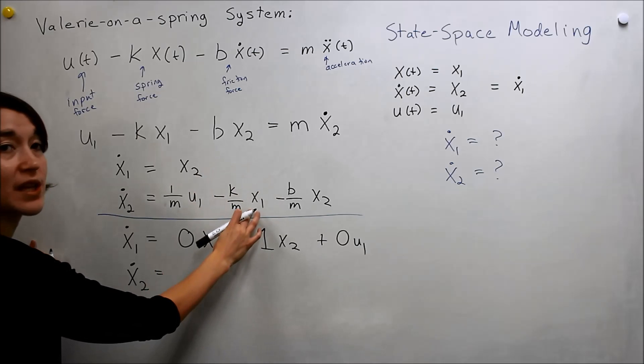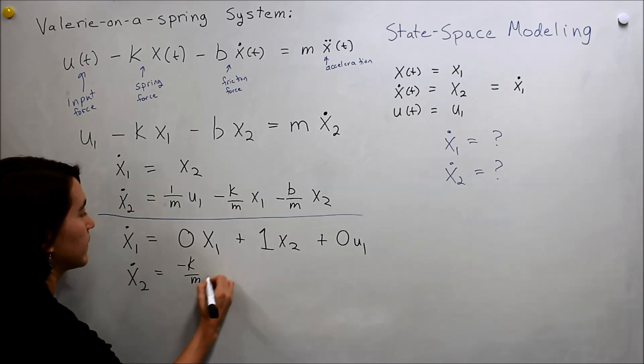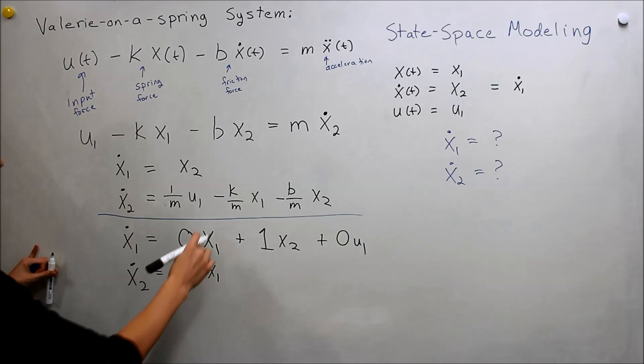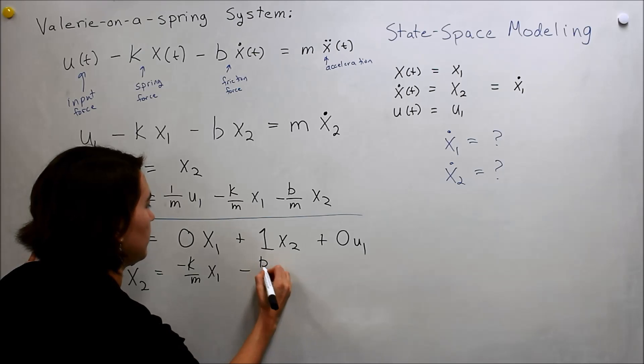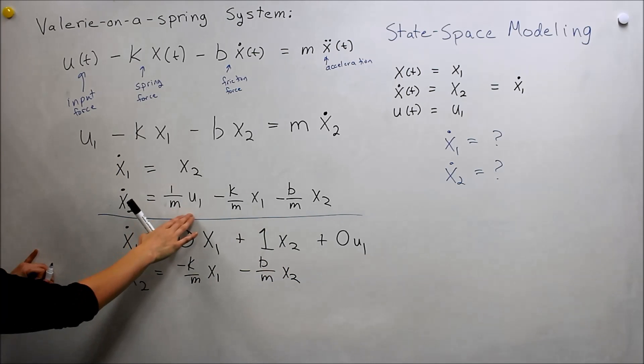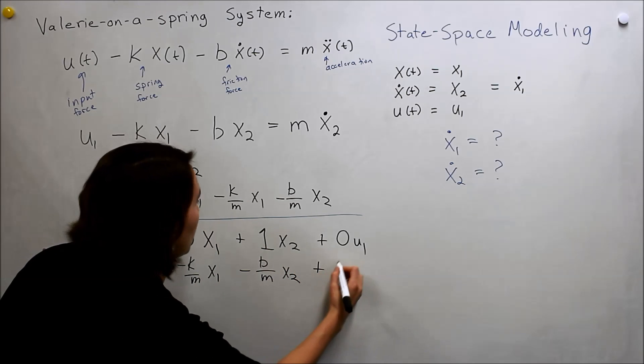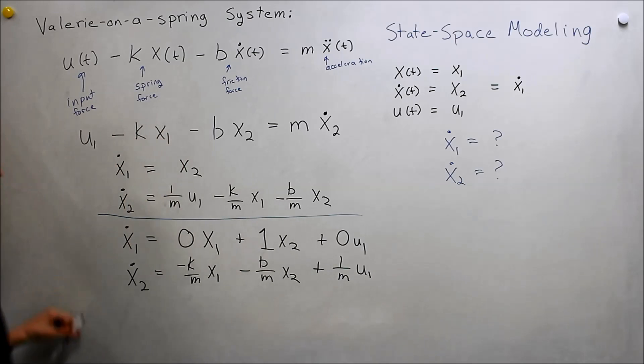x1 dot is equal to, we can write it as, we want to know how x1 relates to x1, x2, and u. So let's write those all down. It doesn't relate to itself. It doesn't relate to x1. So, 0 times x1. It does relate to x2. So it's 1, x2. And this does not relate to the input. So 0, u1. So let's write the same thing here. And here I'll put a little line. We're looking at, we're changing these around a little bit. And, okay, so what about x1? So this does relate to x1. So we'll do negative k over m, x1. And what about x2? Yep, here's something. So negative b over m, x2. And does it relate to the input? Yes, by 1 over m. So 1 over m, u.